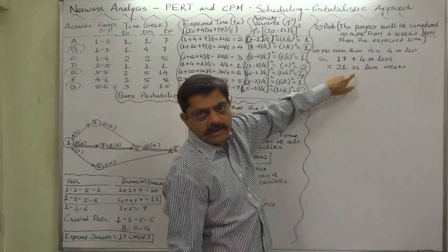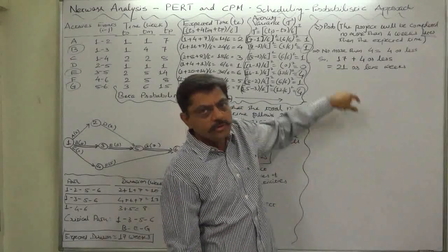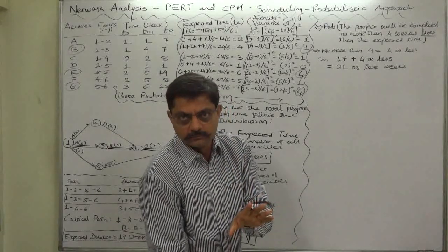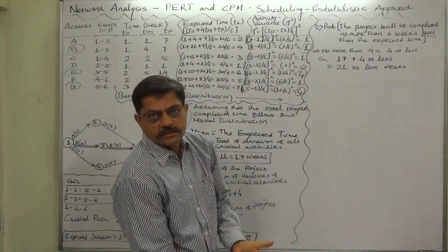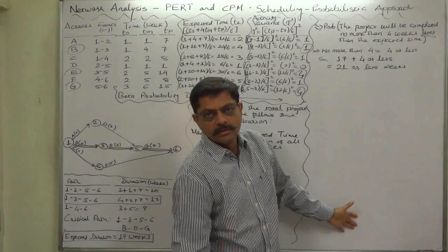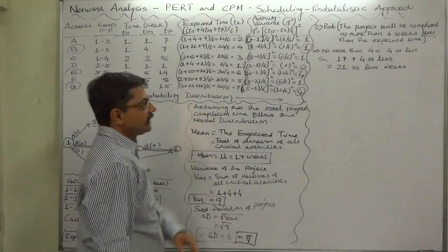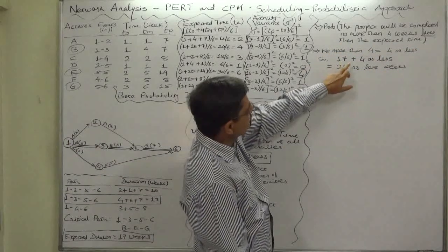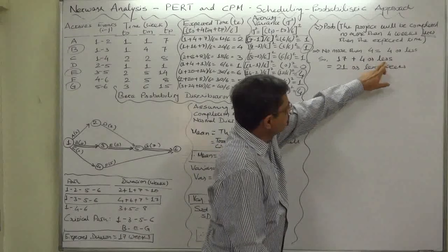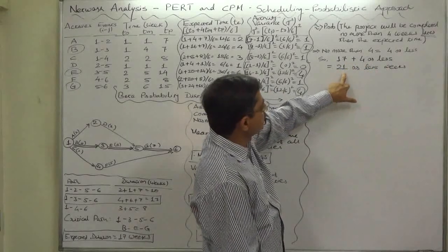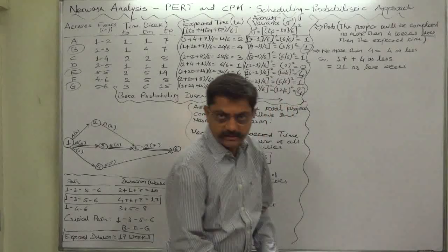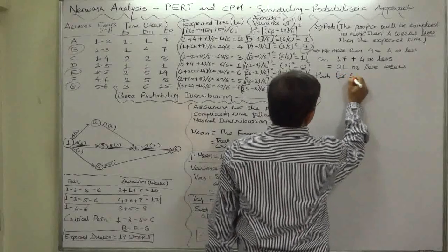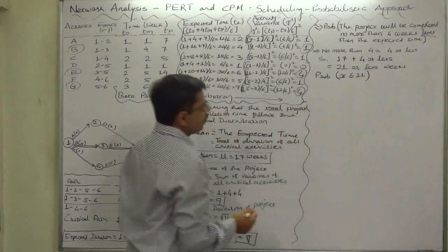If you make any mistake at this stage, you will be calculating the probability of the wrong value of x, and so any further calculation is useless. Please be careful - no more than four weeks later means four or less weeks later than 17, so the total duration will be 21 or less weeks. We need to find the probability of x less than or equal to 21.